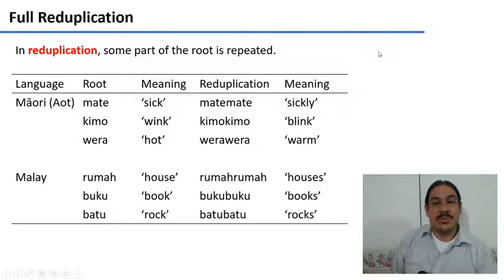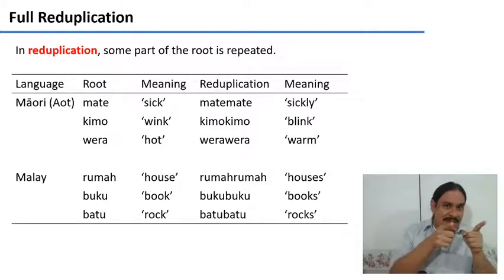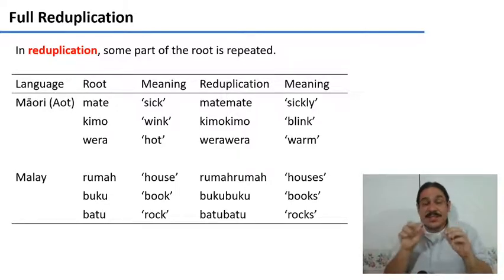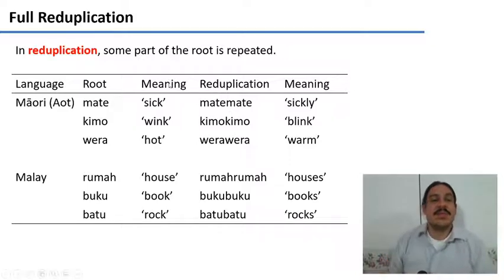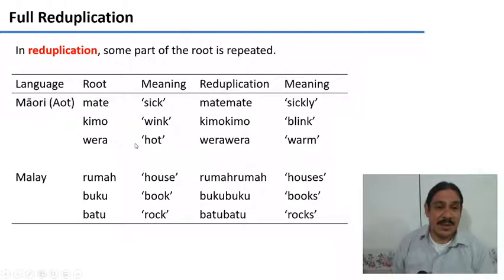We also have reduplication. In full reduplication, you take a root and repeat it completely, and this will mean something different. For example, in Māori from Aotearoa, New Zealand, we have roots like 'mate' (sick), 'kimo' (wink), and 'wera' (hot).